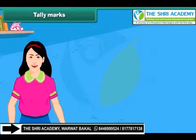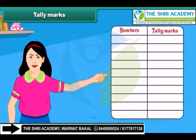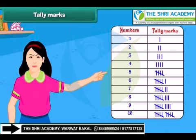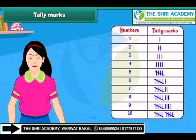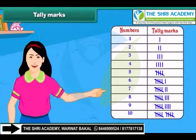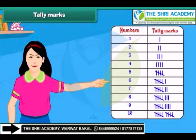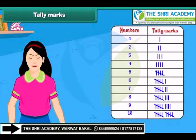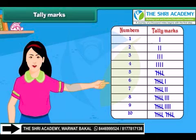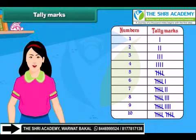Tally marks are one of the easiest and quickest methods used for data handling. A tally mark is counting the objects or activity in groups of 5. A single vertical line represents a single object. For representing 2 objects, 2 vertical lines are drawn. Each mark represents an object.